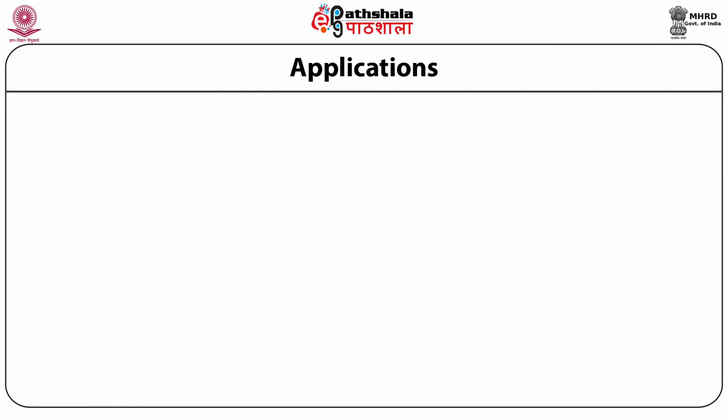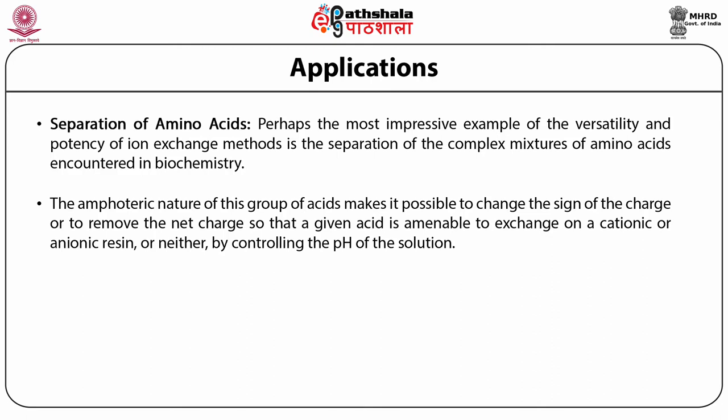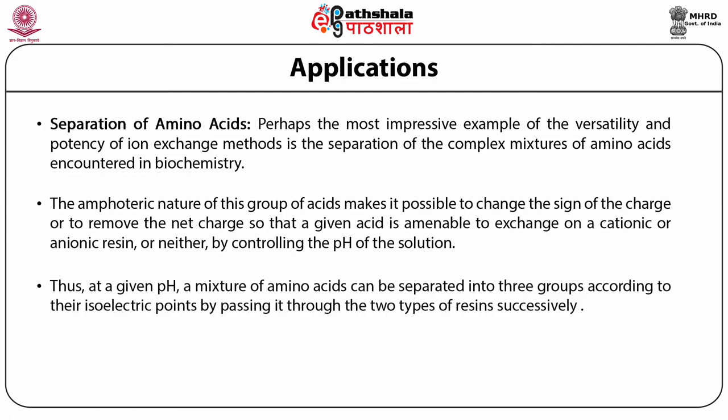Another application is the separation of amino acids. The most impressive example of the versatility and potency of ion exchange methods is the separation of complex mixtures of amino acids encountered in biochemistry. The amphoteric nature of this group of acids makes it possible to change the sign of the charge or to remove the net charge, so that a given acid is amenable to exchange on a cationic or anionic resin, or neither, by controlling the pH of the solution. Thus, at a given pH, a mixture of amino acids can be separated into three groups according to the isoelectric point by passing it through two types of resins. After changing the pH, the groups can be further subdivided.